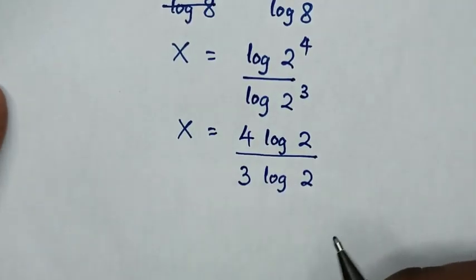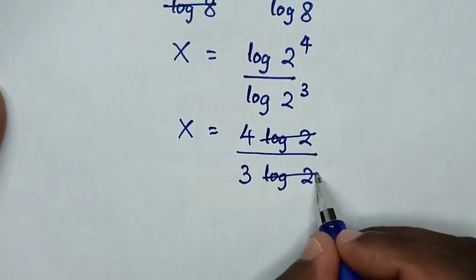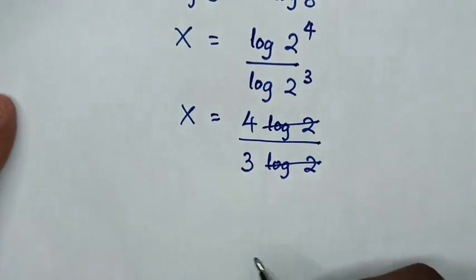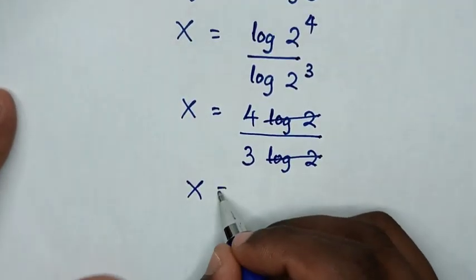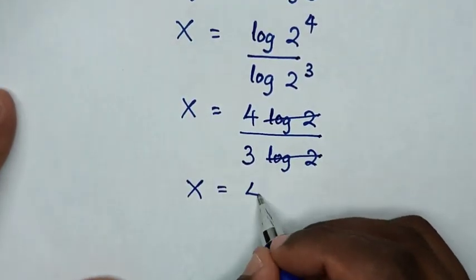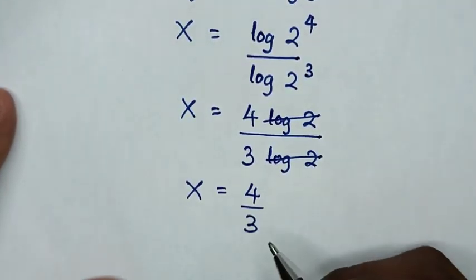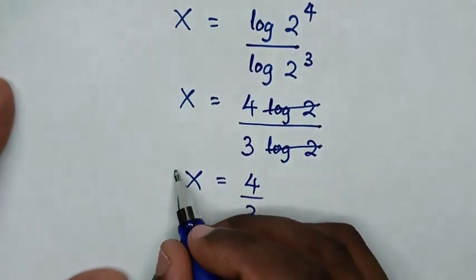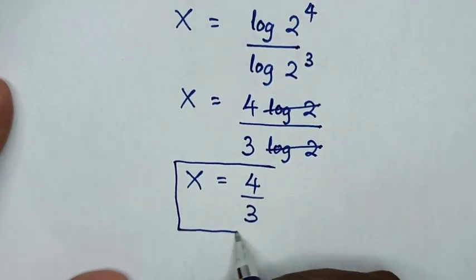In the next step, log of 2 will cancel each other. So it will be x is equal to 4 over 3. This is the final answer for the value of x.